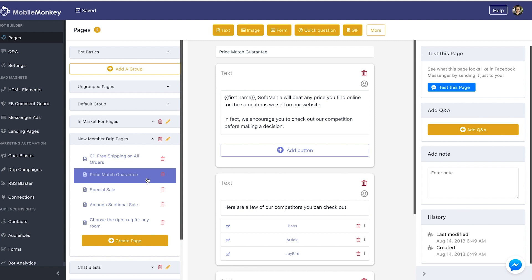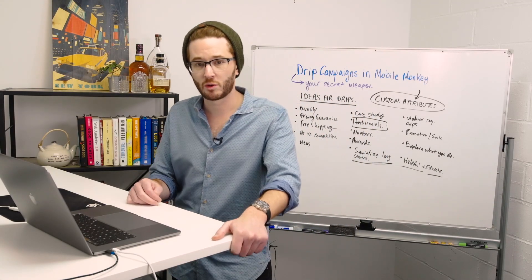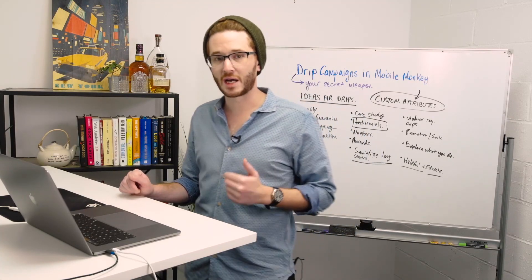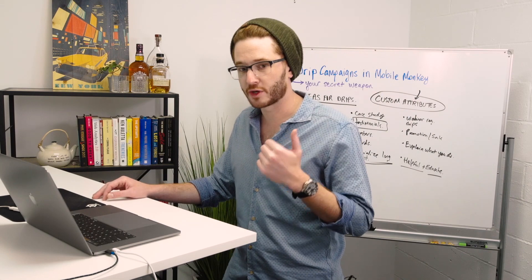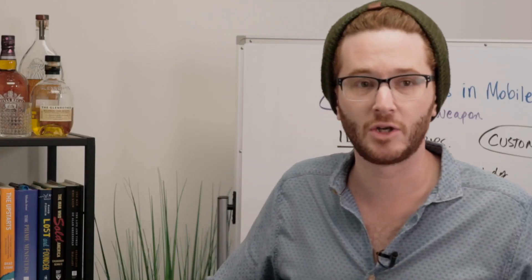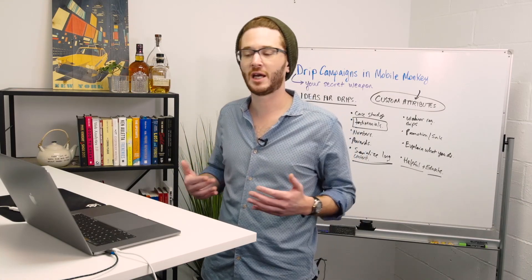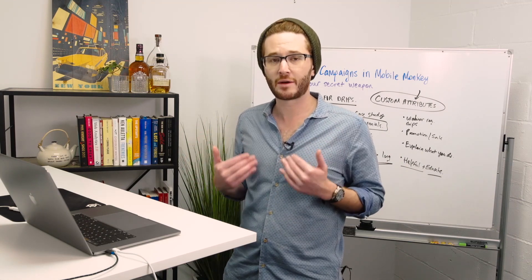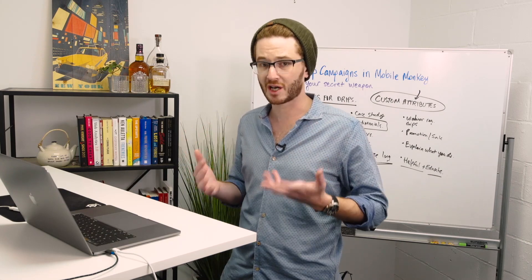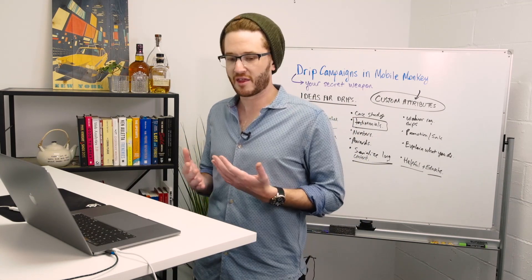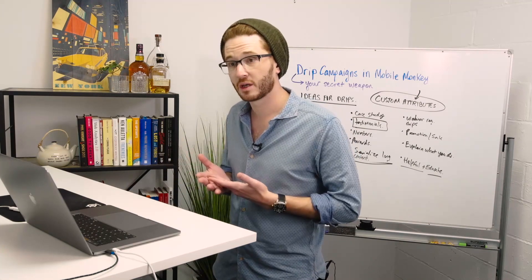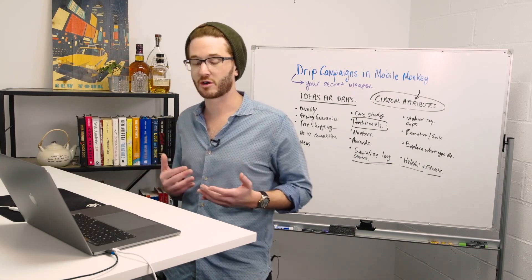The second drip is a price match guarantee — another value proposition. 'Sofa Mania will beat any price you find online for the same items we sell. In fact, we encourage you to check out our competition before making a decision.' This is a bit of a risky move, but when you're confident in your product, customers will appreciate that authenticity. You're not asking them not to shop around — you're confident that if they do, they'll see the value in your products. It's incredible marketing.